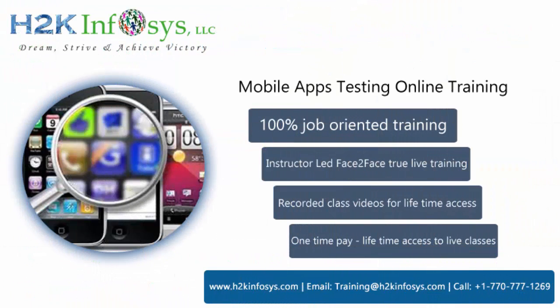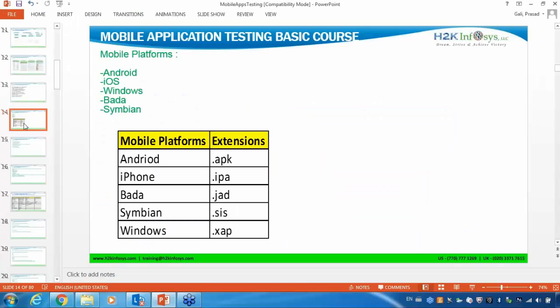Are we developing for Android and iOS? Yes, we are developing for both Android and iOS platforms. Then, as a tester, how will you know that whatever application you got from the developer — is it an Android application or is it an iOS application? You can identify your application based on the extensions. If you are getting any hybrid or native applications, then each application will have extensions like this.